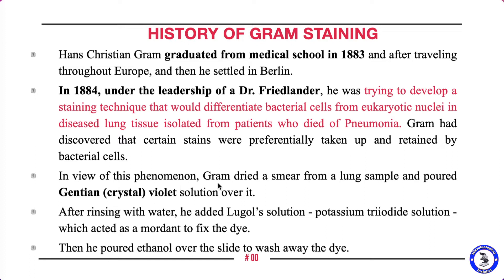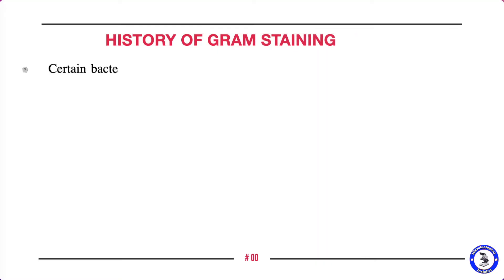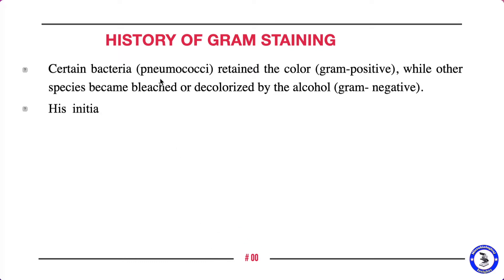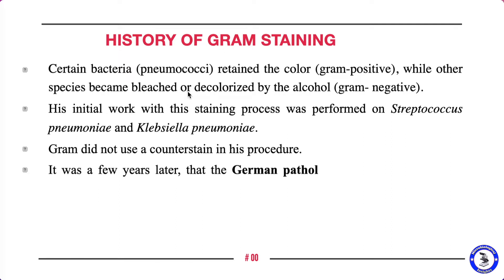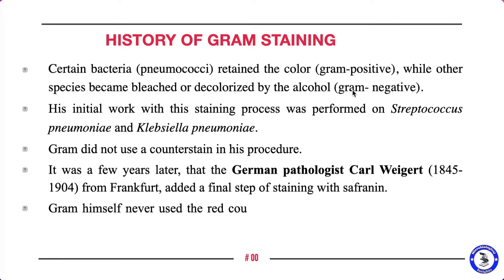Christian Gram also worked with Dr. Friedlander and noticed that certain stains were preferentially taken up by certain groups of bacteria. He repeated the experiment, drying a smear from lung tissue from pneumonia patients. He poured gentian violet or crystal violet solution over it, rinsed with water, then added Lugol's solution — potassium triiodide — which acts as a mordant to fix the dye to the organism. He then poured ethanol over the slide, and noticed that certain bacteria — pneumococci, which are gram positive — retained the color, while some species were decolorized by alcohol, which he called gram negative.